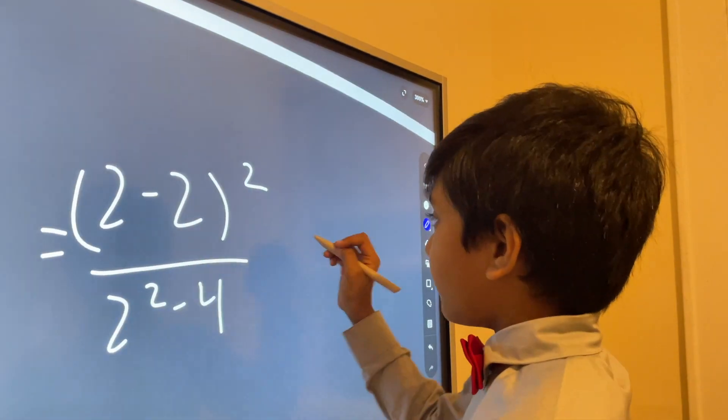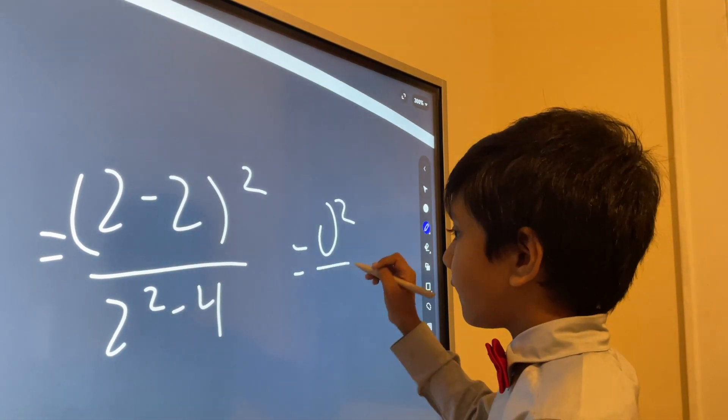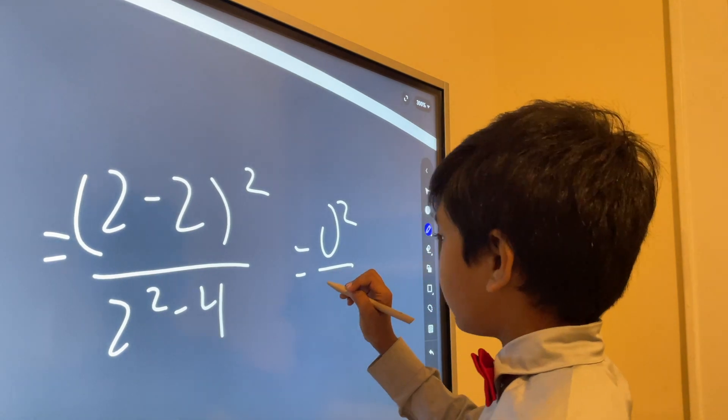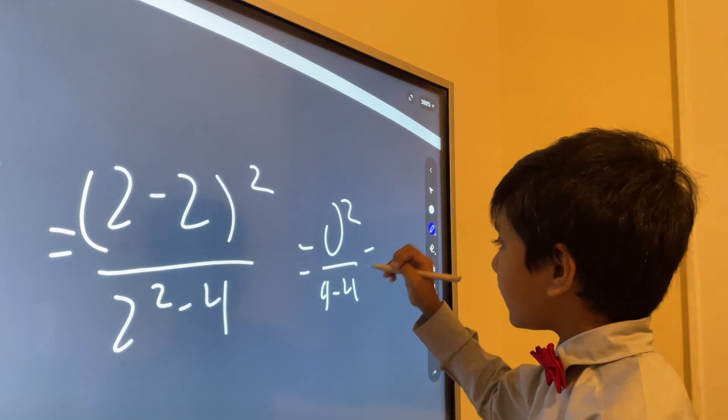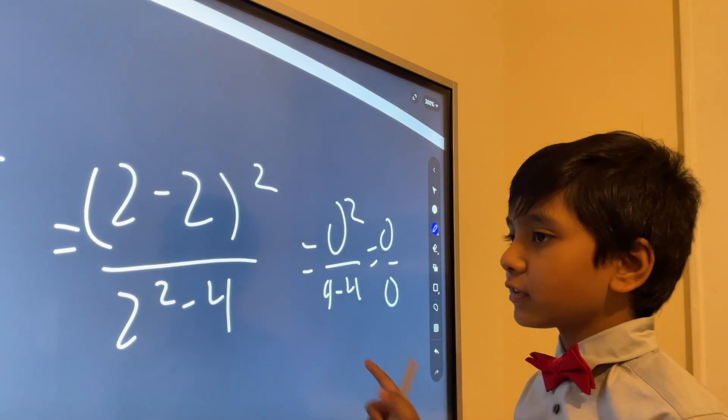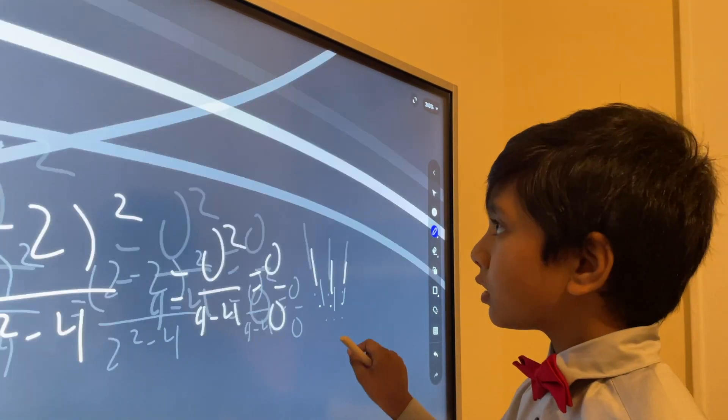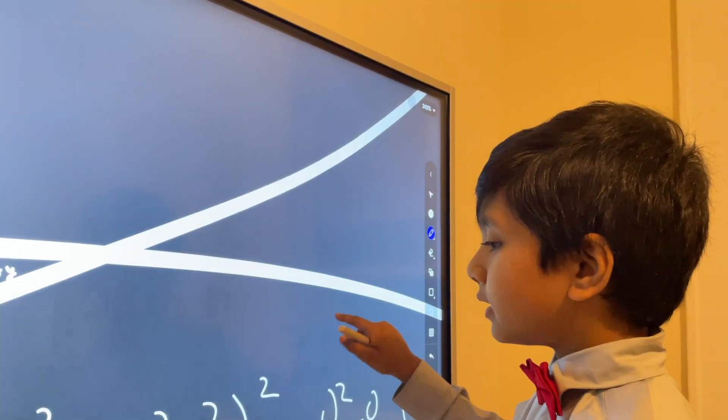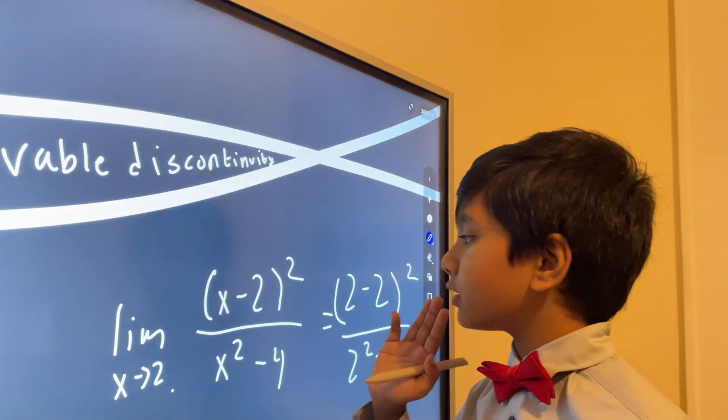Then, you simplify everything, and then you have this, and you get the beautiful 0 over 0, which is an indeterminate form. So that creates a discontinuity.